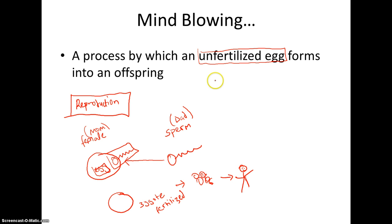Now parthenogenesis. What occurs is that we have a female egg, and this egg which has no father forms into an offspring. That is parthenogenesis, and it's mind blowing.